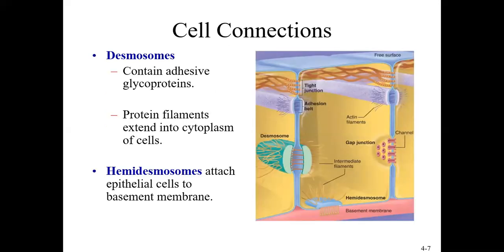Looking at these individually: desmosomes attach cells together. In the picture you see two cells — possibly epithelial cells stacked side by side — with a desmosome, a protein-type molecule in the cell membrane binding two cells together. Sometimes you see these at the bottom of a cell, where there's a basement membrane. A half-desmosome at the base is called a hemidesmosome, anchoring the cell to the basement membrane at the bottom.